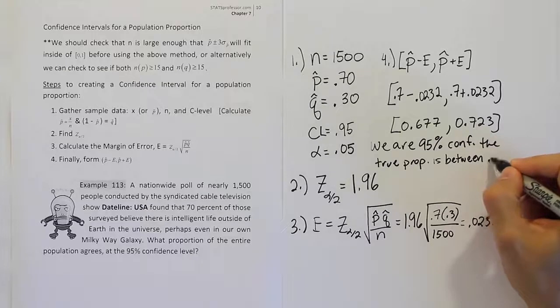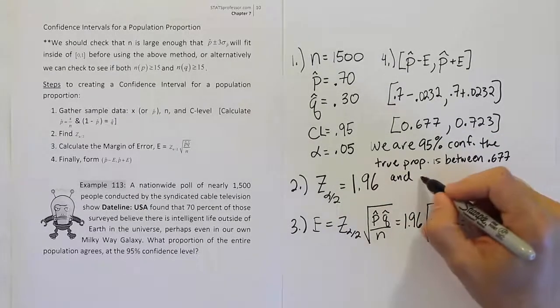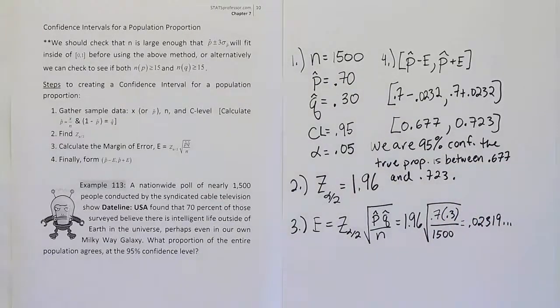And the answer is, of course, 0.677 and 0.723. So, as percents, that would be 67.7% and 72.3%. And that's it. That's how you form a confidence interval for the proportion. Thank you.